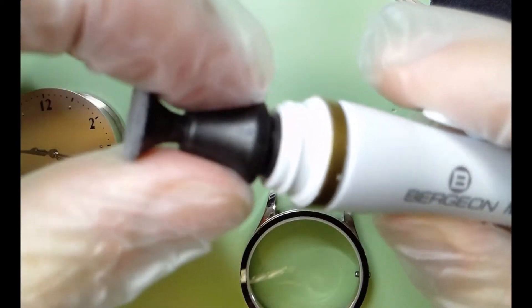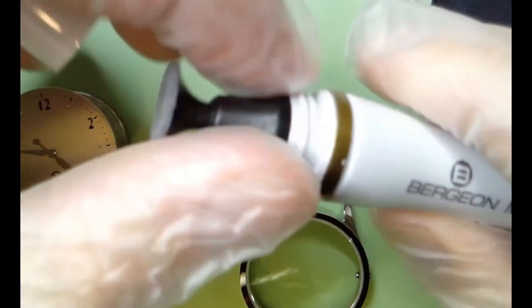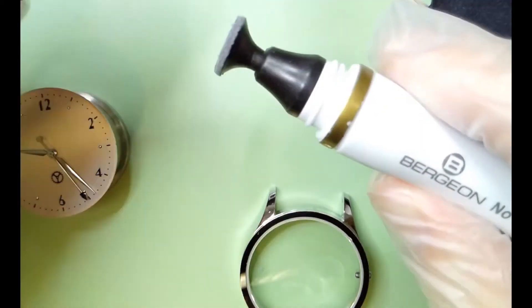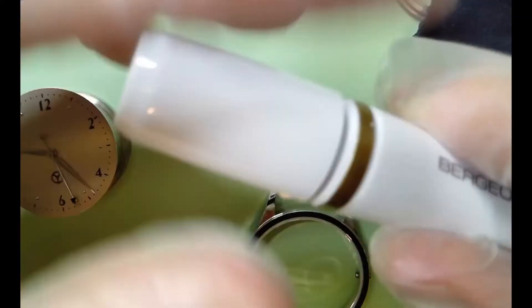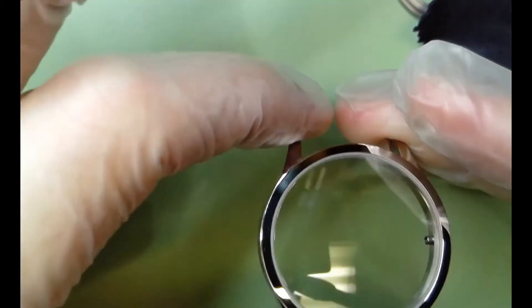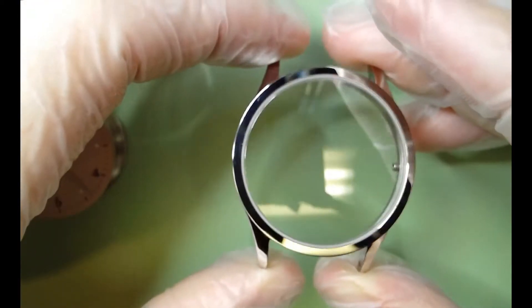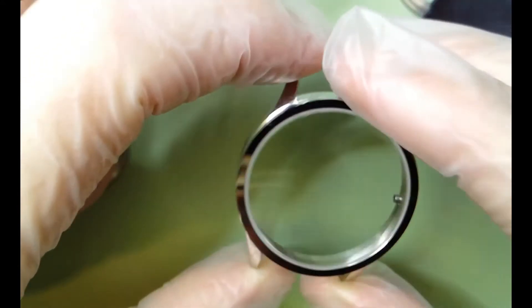And you can even buy replaceable tips that are convex and concave based on the type of sapphire you're working with. So it's just a great little tool to work with. But in any case, you're cleaning out the dial at this point to the best of your ability. And on the next step, I'm going to assume your case is clean.